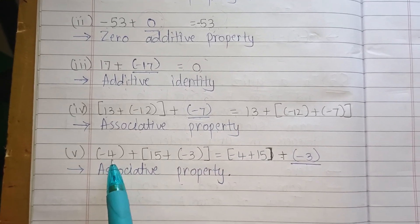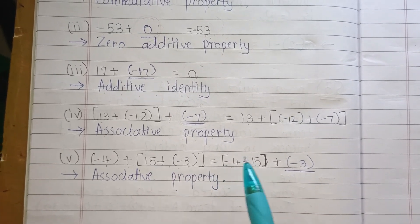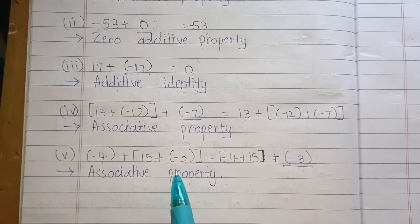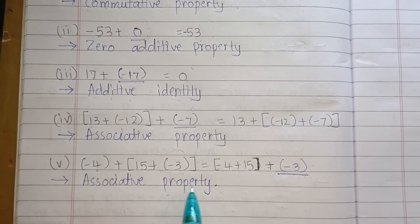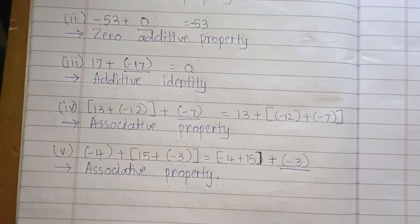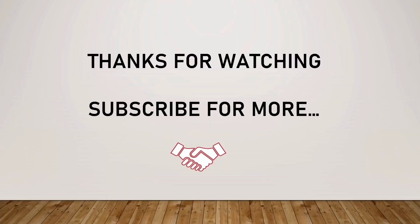The last one: minus 4 plus (15 plus minus 3) equals (minus 4 plus 15) plus blank — answer is minus 3 — Associative Property. We have completed Exercise 1.1. In the next video I will explain the answers of Exercise 1.2 and the theory before it. Thanks for watching — please subscribe to my channel. Thank you all.